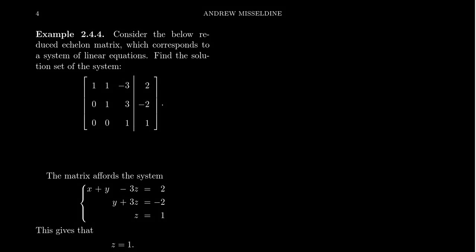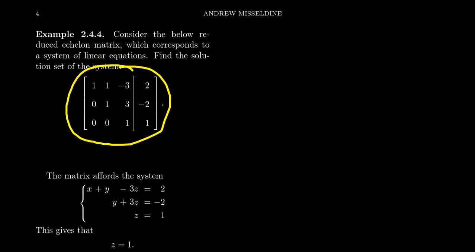In the previous lecture video, we learned about what it means for a matrix to be in echelon form, or row-reduced echelon form. This is very important when one studies an augmented matrix, such as the augmented matrix shown here on the screen. As we've also learned, augmented matrices encode systems of linear equations. So if an augmented matrix is in echelon form, I want to show you what that says about the associated system of linear equations. But let's first double-check that this matrix is in fact in echelon form.